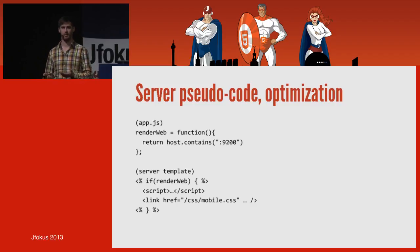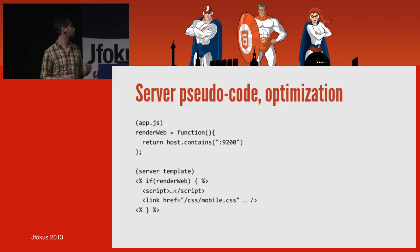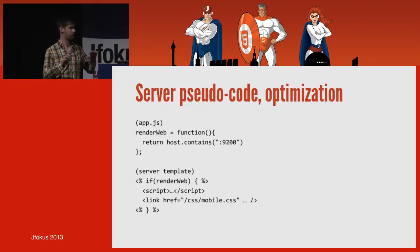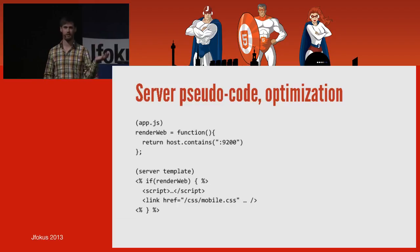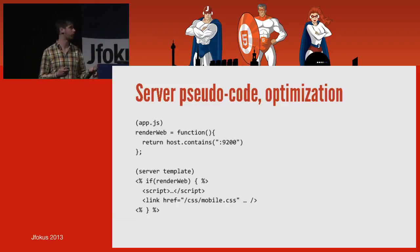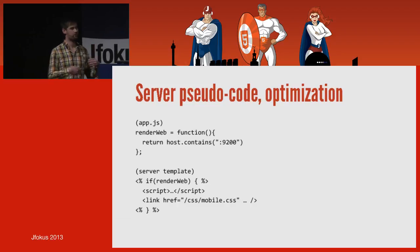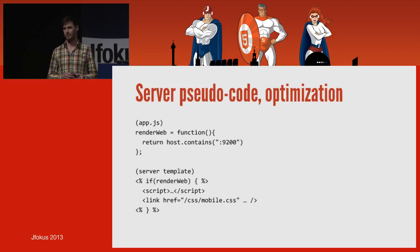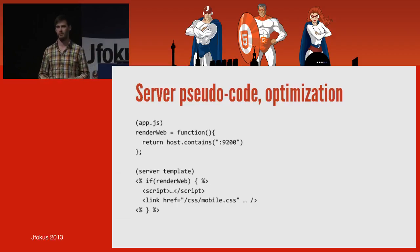On the server side, there's a function that indicates whether the application is being served from an API or web perspective — in my case differentiating on port number. For the web, you redirect the user to the index page after creating a new bug; from the API perspective you return a status code. Similarly, you can optimize away CSS and JavaScript elements on the API side with a simple if statement in your templates — it's not ideal to send script and CSS elements to API clients.